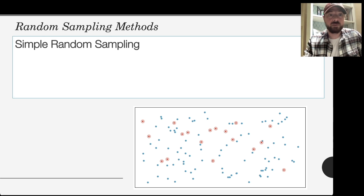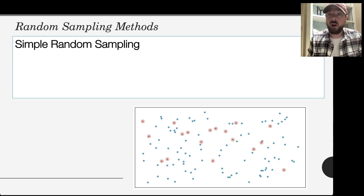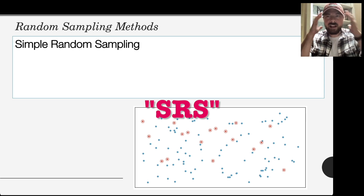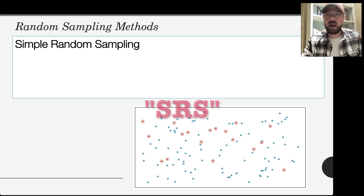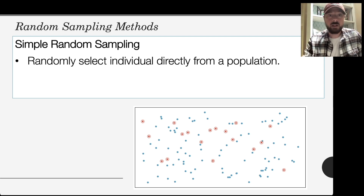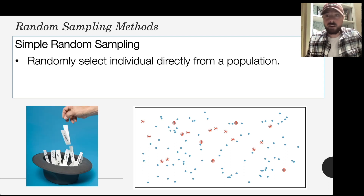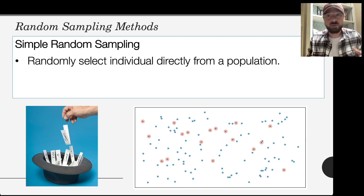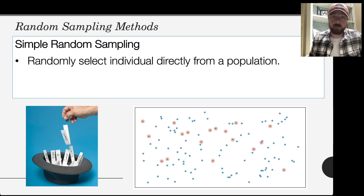The first method is the most basic kind — it's called simple random sampling, or SRS. It's what you have in mind when you think of random sampling: you randomly select each individual directly from the population. If I wanted to randomly pick a couple of students in class, I might take all their names, put them in a hat, pull out five names, and now I've got my simple random sample.